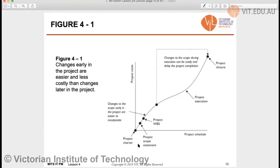We'll now look at a figure showing that a project starts with the project charter, which we already know, then goes through the project scope statement to the work breakdown structure, which we'll discuss today, then through project execution to project closure. The key point from this figure is that changes early in the project are easier and less costly than changes later in the project, which is very true and logical.